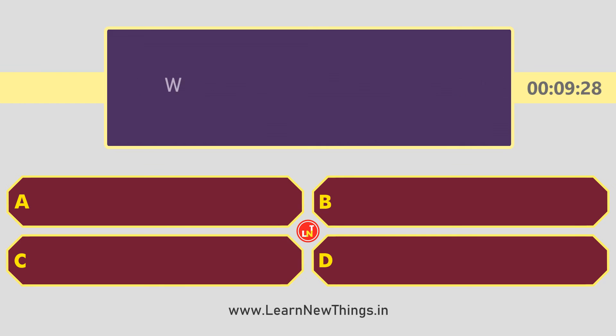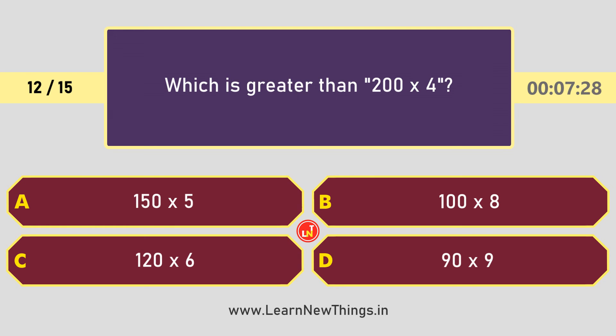Which is greater than 200 into 4? The answer is 90 into 9.